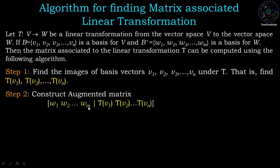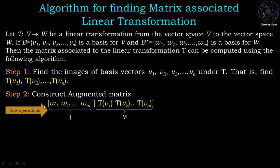In the second step, construct the augmented matrix where W1, W2, ..., Wm are the columns augmented with Tv1, Tv2, ..., Tvn, where W1, W2, ..., Wm are the basis vectors of the co-domain space. Now apply row operations such that W1, W2, ..., Wm convert into the identity matrix, and applying the same operations on the remaining part will give the matrix associated to the linear transformation.